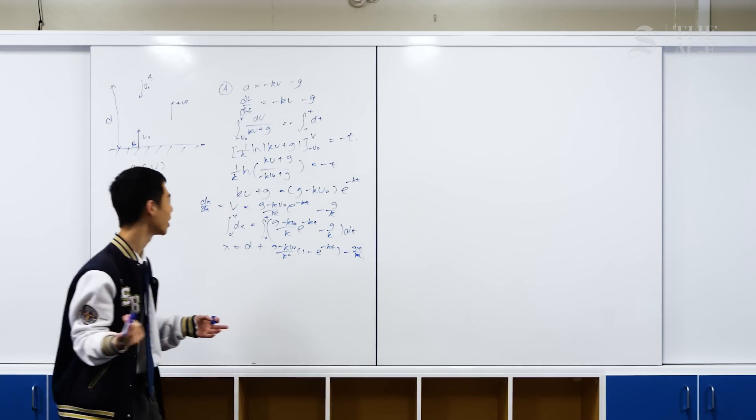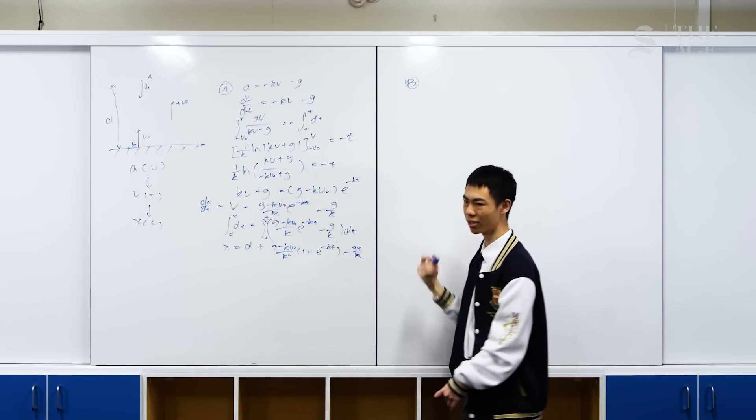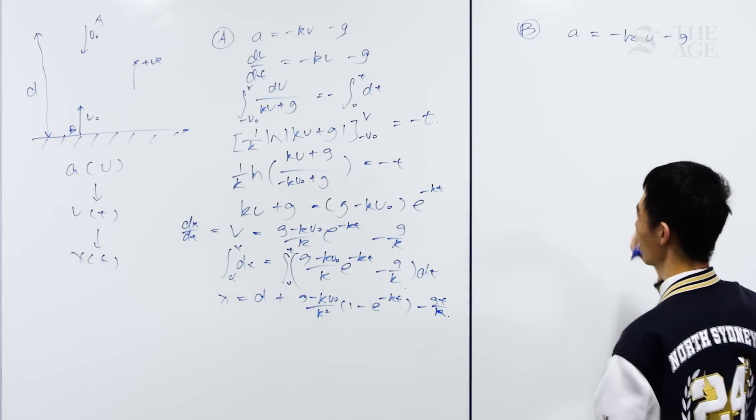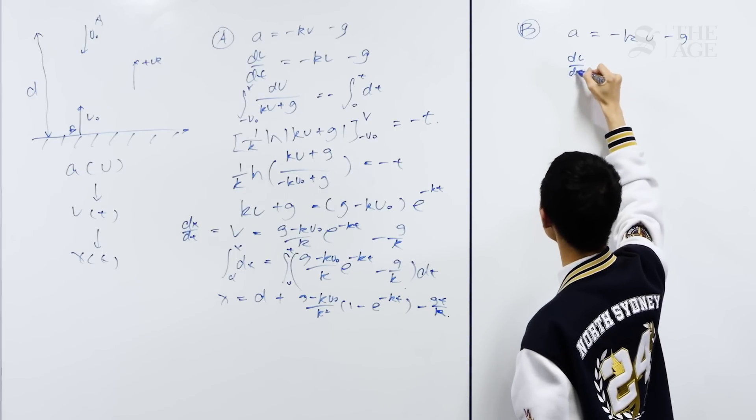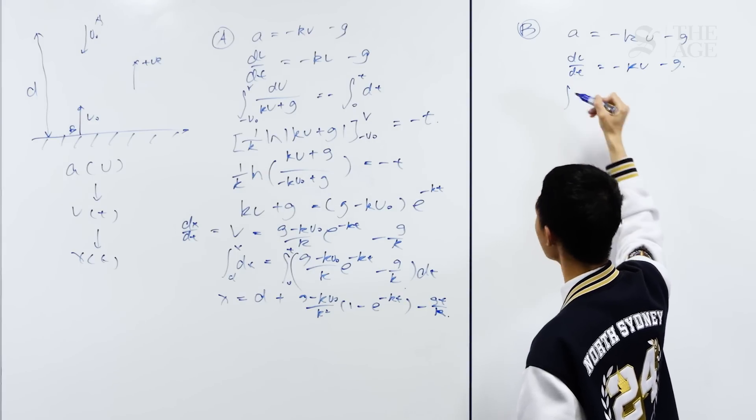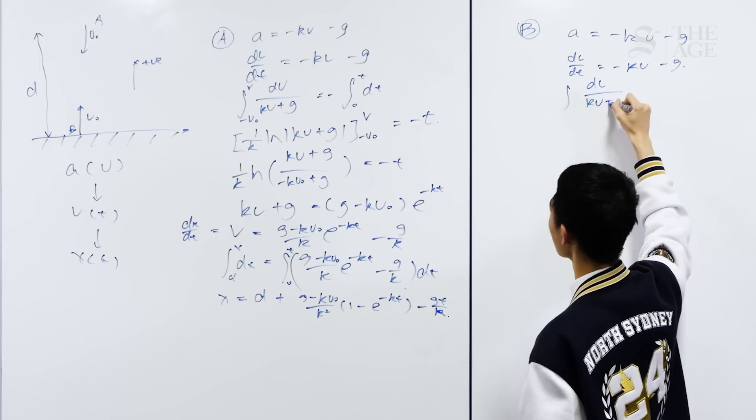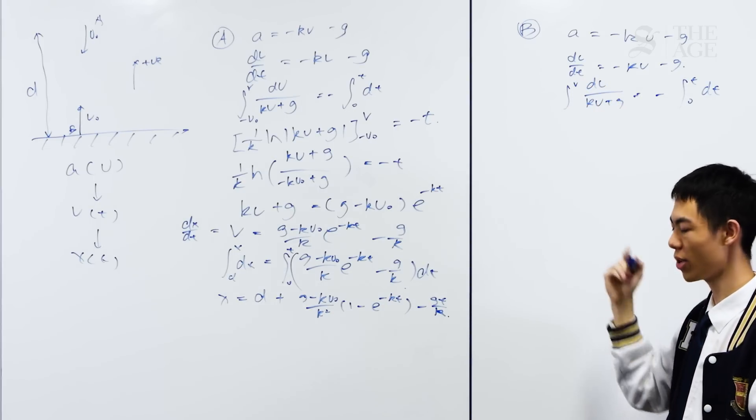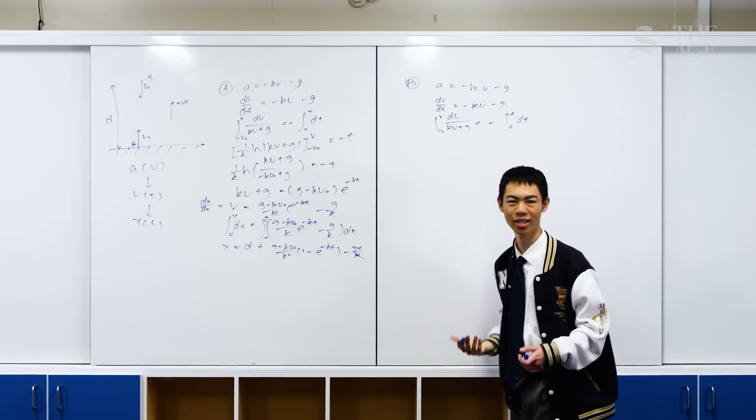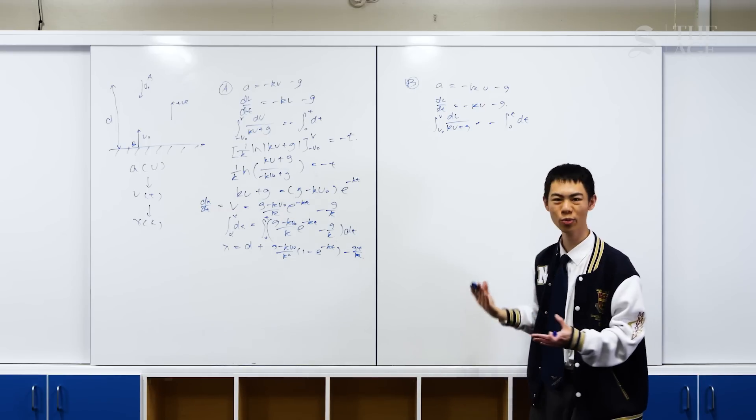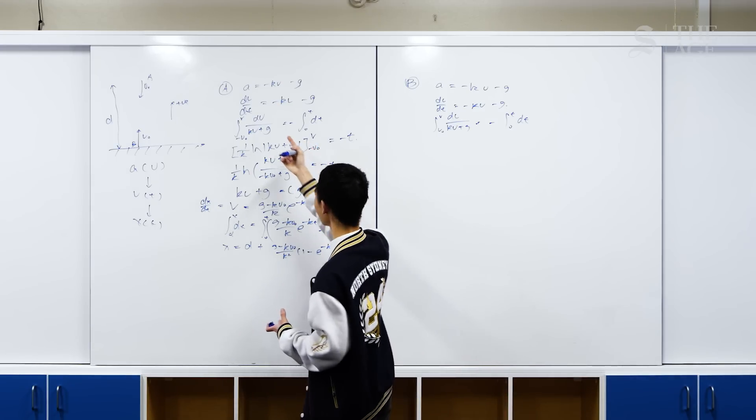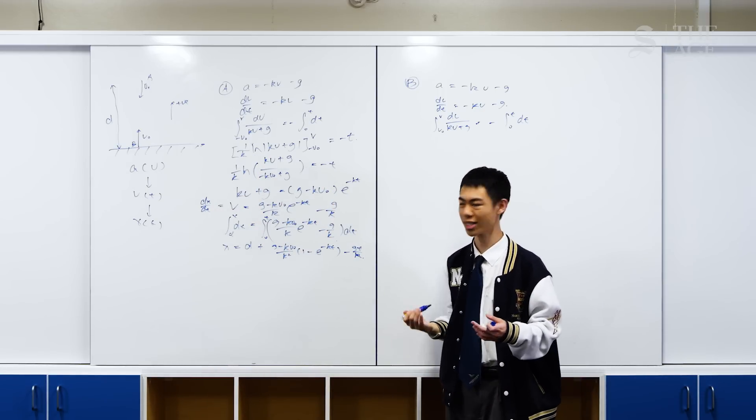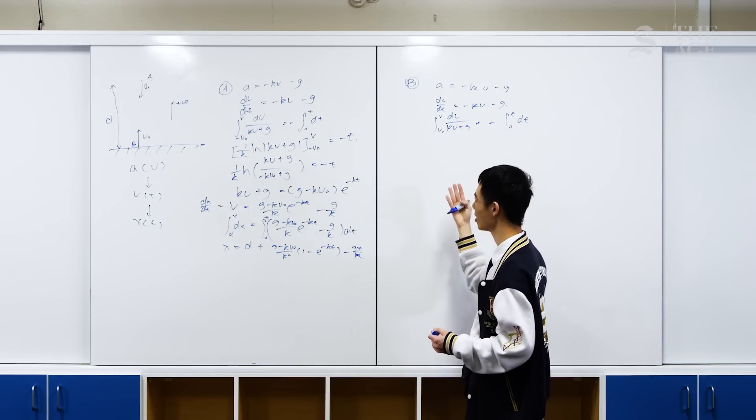We'll be doing something very similar for the second particle. For particle B, which starts on the ground, we have the exact same equation: a equals negative kv minus g. So once again, we have dv/dt equals negative kv minus g. For this one, we're going up initially, which means the initial velocity is v0. It's really easy to just start doing the integral here, but one thing we might realize is that this integral is pretty much exactly the same as this integral. The only thing that changes is we have negative v0 and we're changing it into a v0. That means we don't actually have to do the integral all over again. All we need to do is change the sign of the v0.